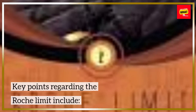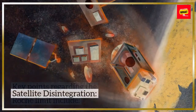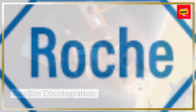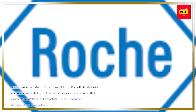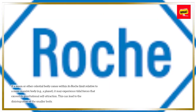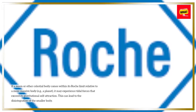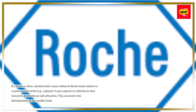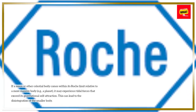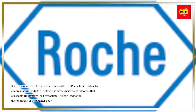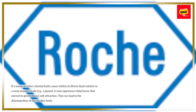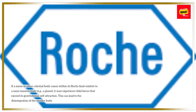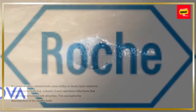Key points regarding the Roche limit include satellite disintegration: if a moon or other celestial body comes within its Roche limit relative to a more massive body (e.g., a planet), it may experience tidal forces that exceed its gravitational self-attraction. This can lead to the disintegration of the smaller body.